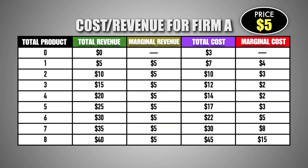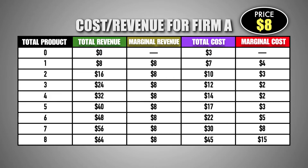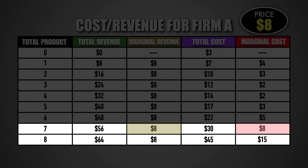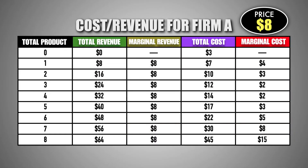At a price of $5 per unit, the firm stopped production at six units because the marginal revenue of the sixth unit equaled its marginal cost, and producing the seventh unit would detract from profits because the marginal cost to produce it was $3 more than the marginal revenue it would generate. However, now that the marginal revenue of each unit is $8, the firm has an incentive to produce the seventh unit because its marginal revenue equals its marginal cost, meaning that the seventh unit is the last unit the firm can produce before marginal cost becomes greater than marginal revenue. According to the Optimal Output Rule, the firm should increase production and produce seven units of good M in order to maximize profits.